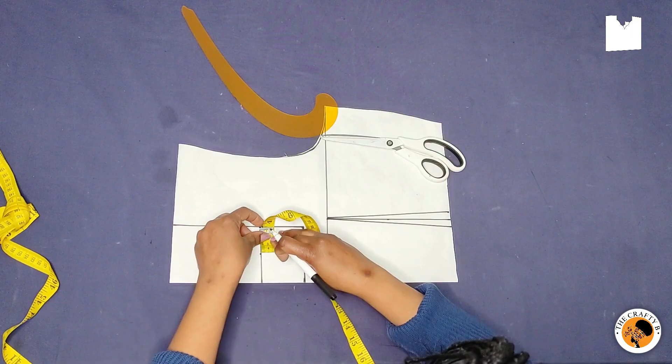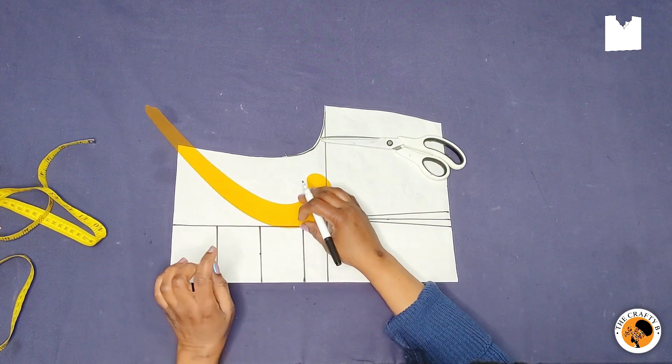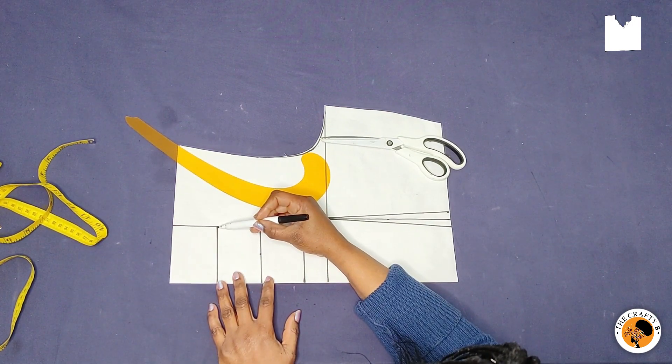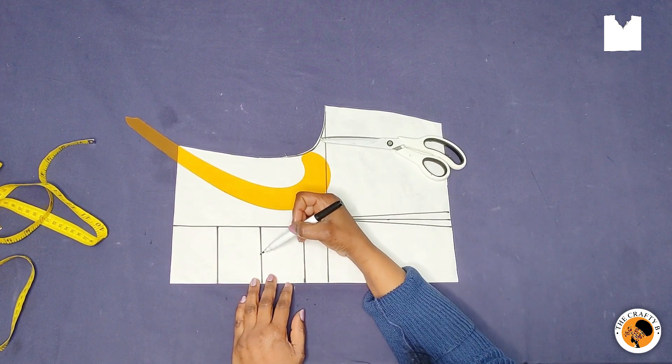So to create the neckline now, you take your curved ruler and come to this line here and draw a curved line to meet these points here, and also a curved line to meet the center point here.